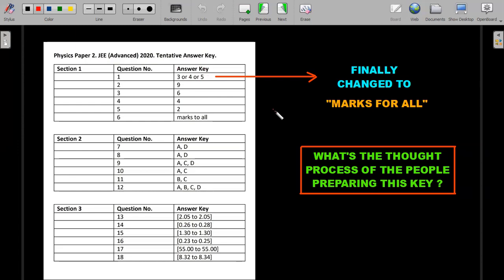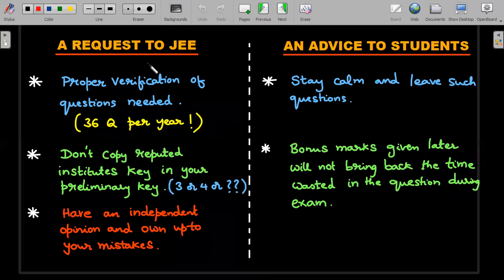What's the thought process of the people preparing this key? I don't even understand. If you've made a mistake, own up to it and try to correct it. That's a simple request through this particular channel. Proper verification of questions is needed. You're just setting 36 questions per year.